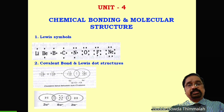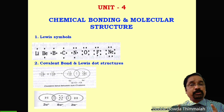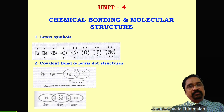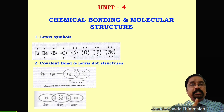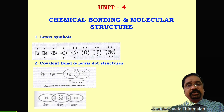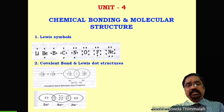Using Lewis dot structure, we can understand covalent bond formation. A covalent bond is formed between two atoms by sharing one, two, or three pairs of electrons — the shared pair of electrons belongs to both atoms. If the shared pair belongs to only one of the atoms, that bond is called a coordinate bond. If two pairs of electrons are shared, it is a double bond; if three pairs are shared, it is a triple bond.